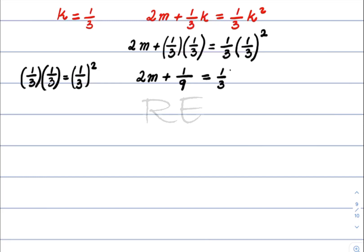The right side equals one-third times one-third squared, which is one-ninth. 2m plus one-ninth equals—one times one is one, and three times nine is twenty-seven—one-twenty-seventh. We're going to subtract one-ninth from both sides.